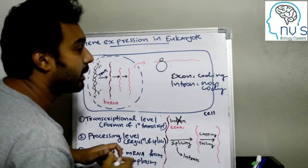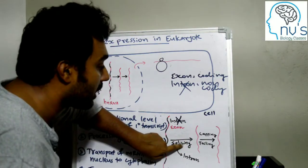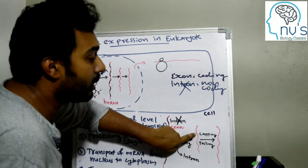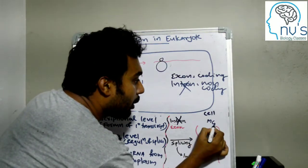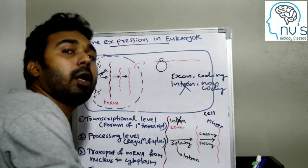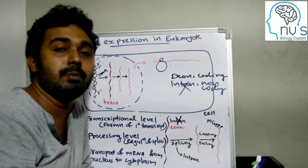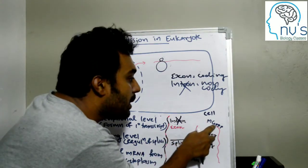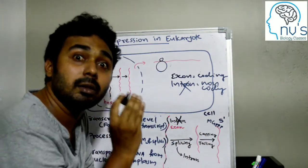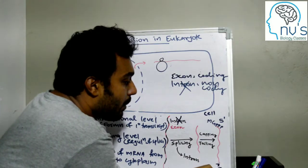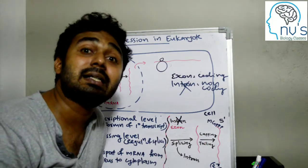The capping process adds an unusual nucleotide called MGppp — methyl guanosine triphosphate — to the 5' end of the hnRNA sequence.